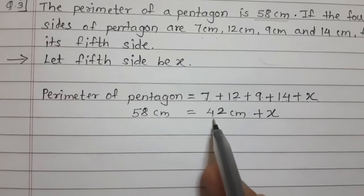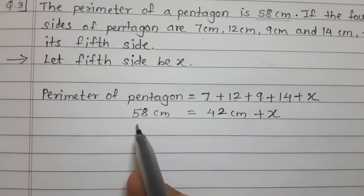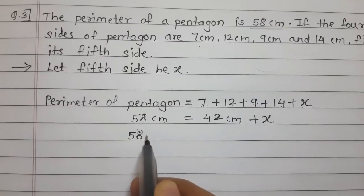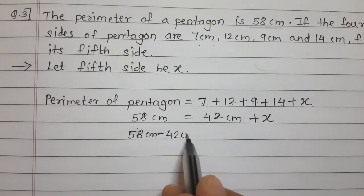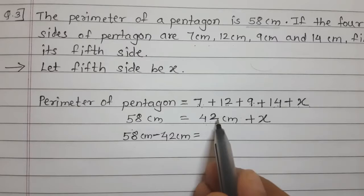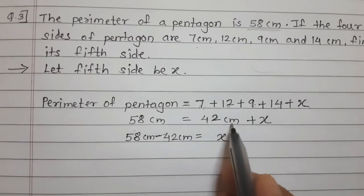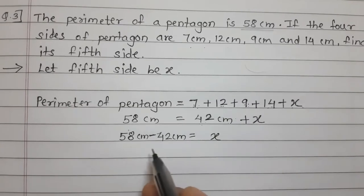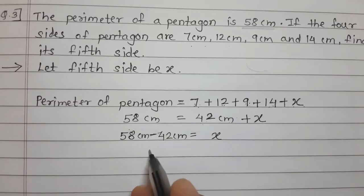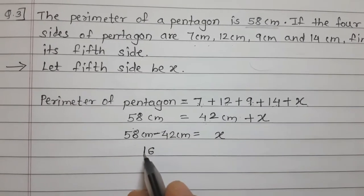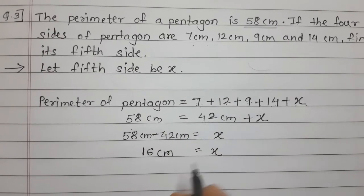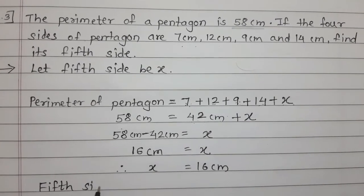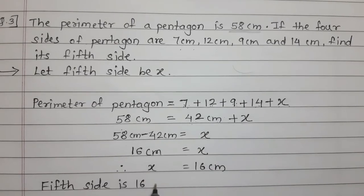Transferring 42 to the left-hand side, it becomes minus. So X = 58 minus 42. 8 minus 2 is 6, and 5 minus 4 is 1, giving 16. Therefore X is equal to 16 centimeter. The fifth side is 16 centimeter.